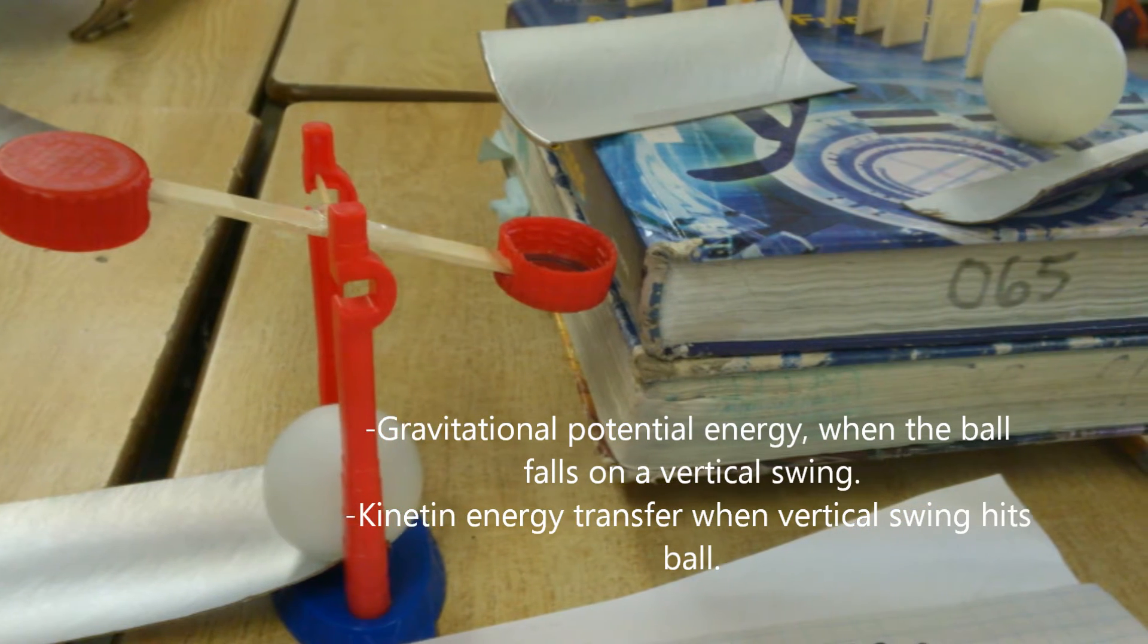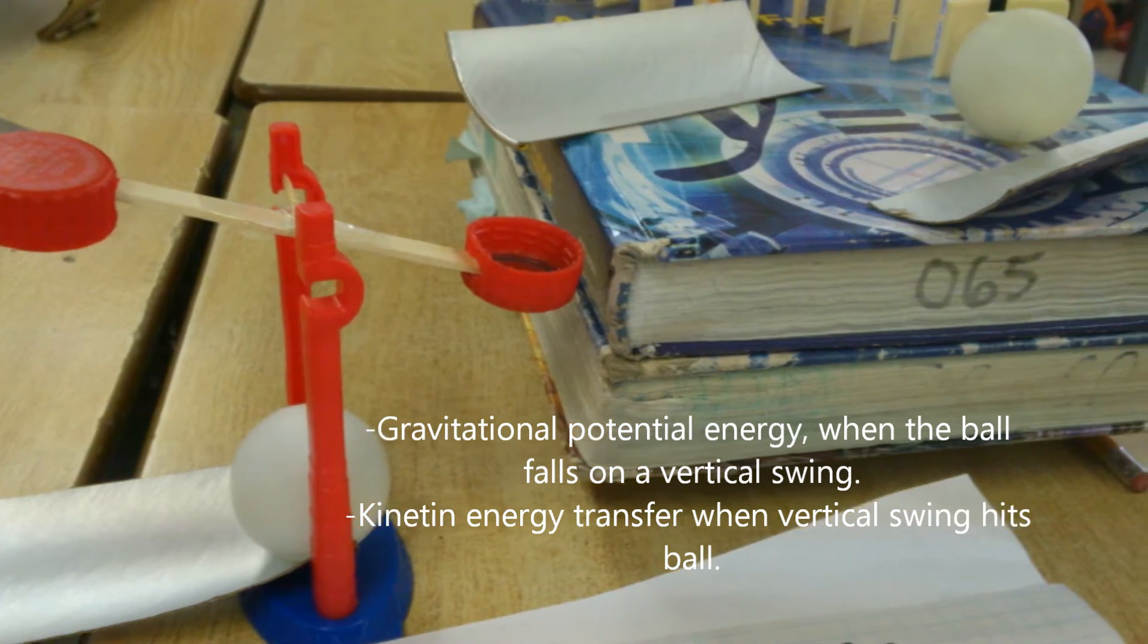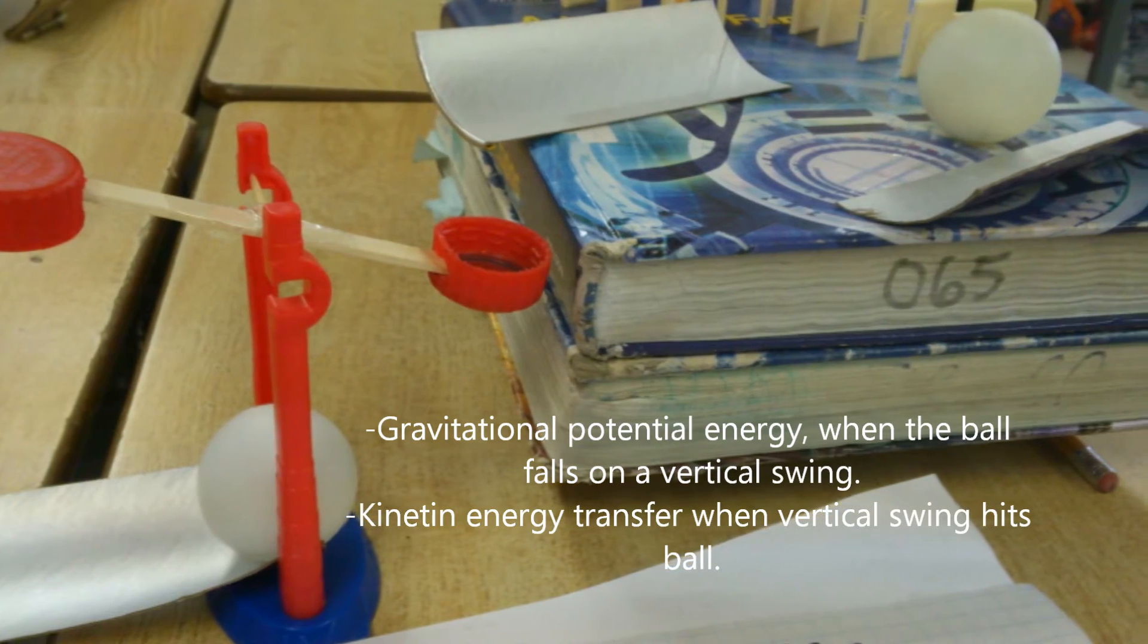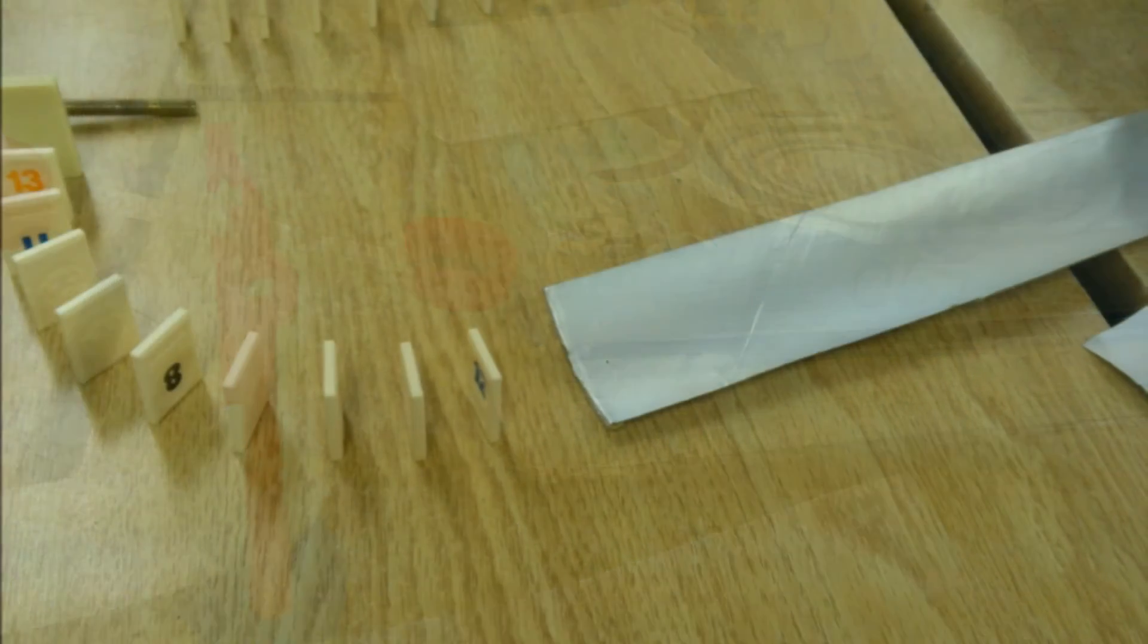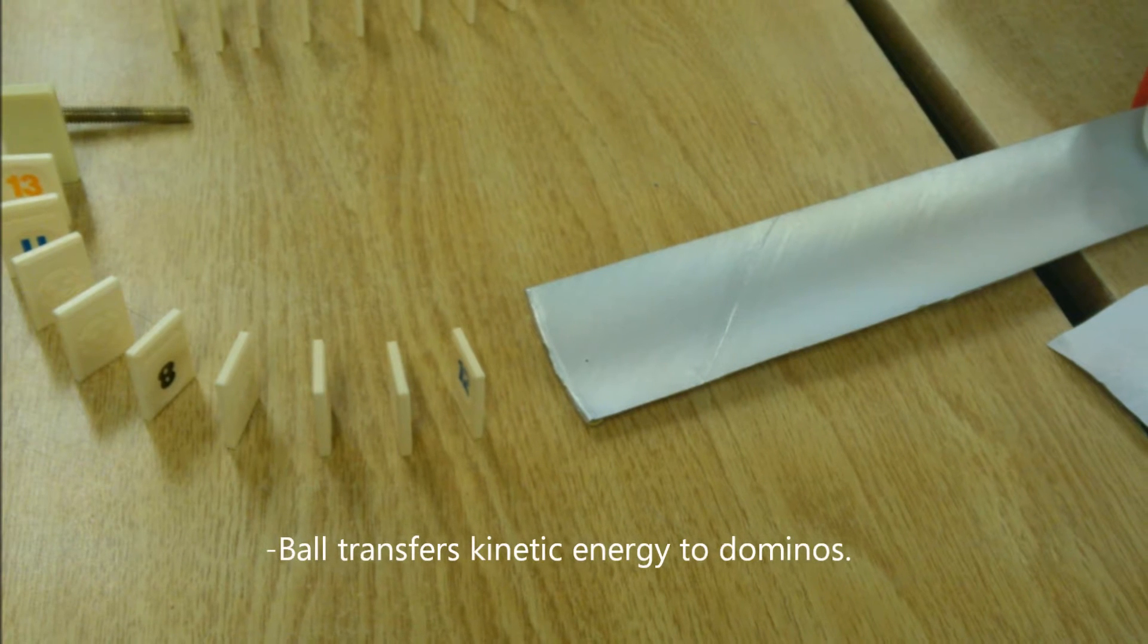When the swing rotates down, it will hit another ball and transfer the kinetic energy. The ball will roll down the ramp and hit another set of dominoes.